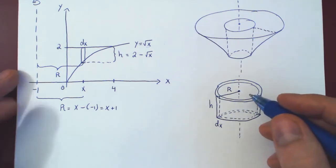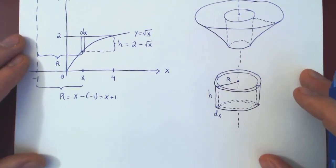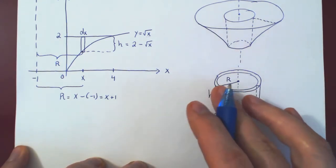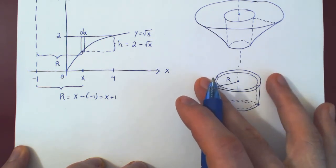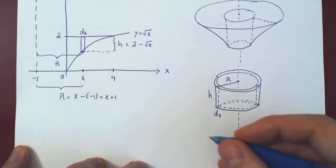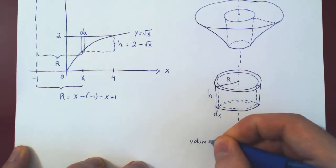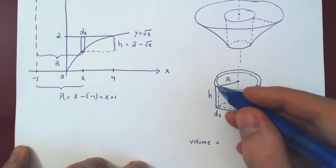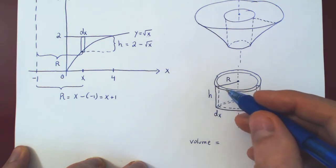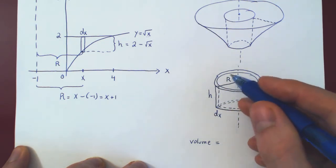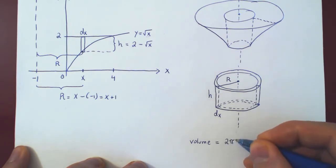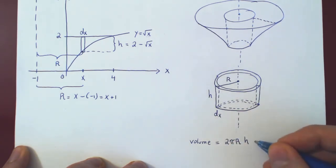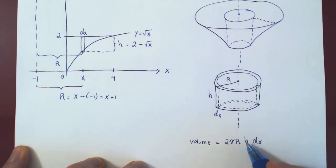Now we have all the measurements in terms of x and we can find the volume of our cylindrical shell. The trick is to cut through one side of the shell, open it, and flatten it out against the page — the cylindrical shell becomes a rectangle. The volume is obtained by finding the area of the rectangle times the thickness. The area is the height h times the length, but the length of the rectangle is the circumference of the shell, which is 2 pi r. So: circumference times height gives the area, times thickness gives the volume.